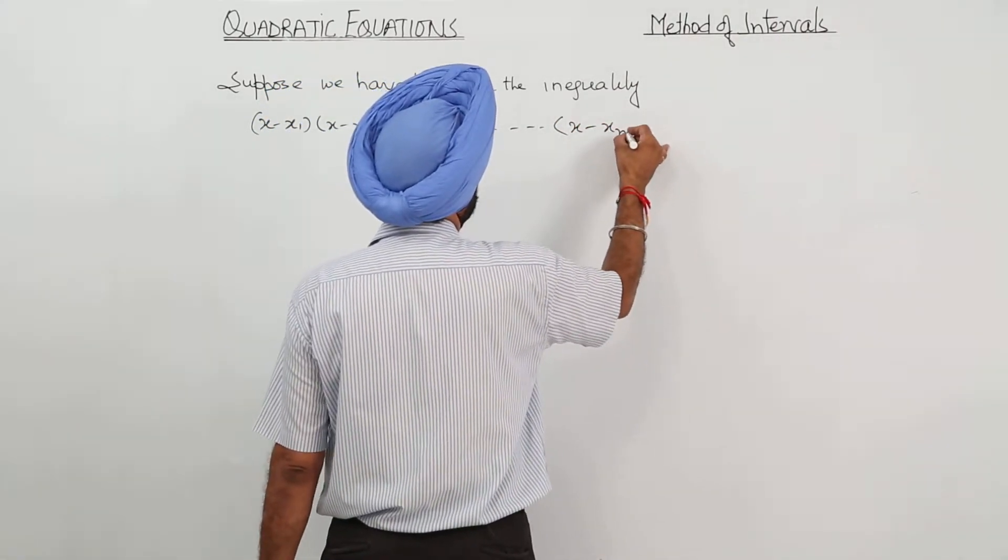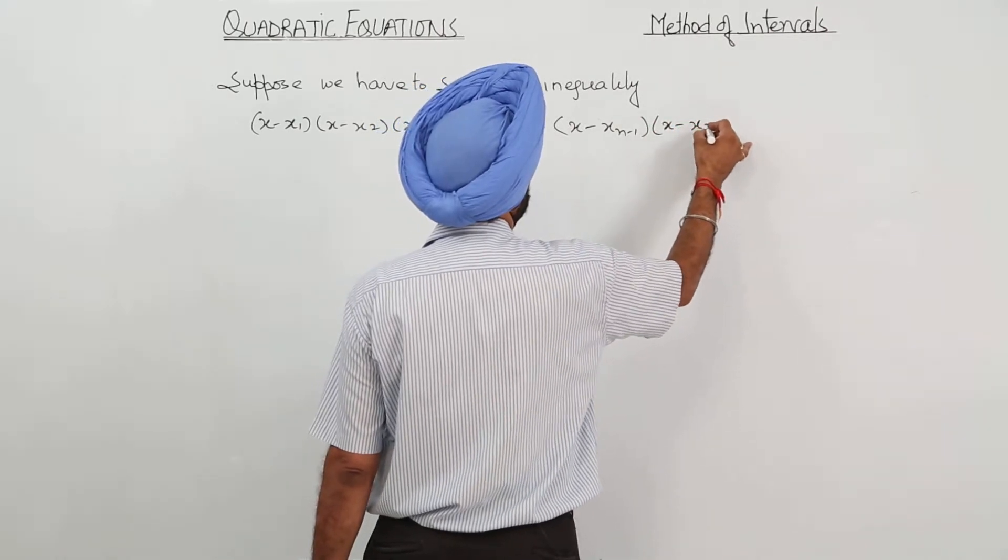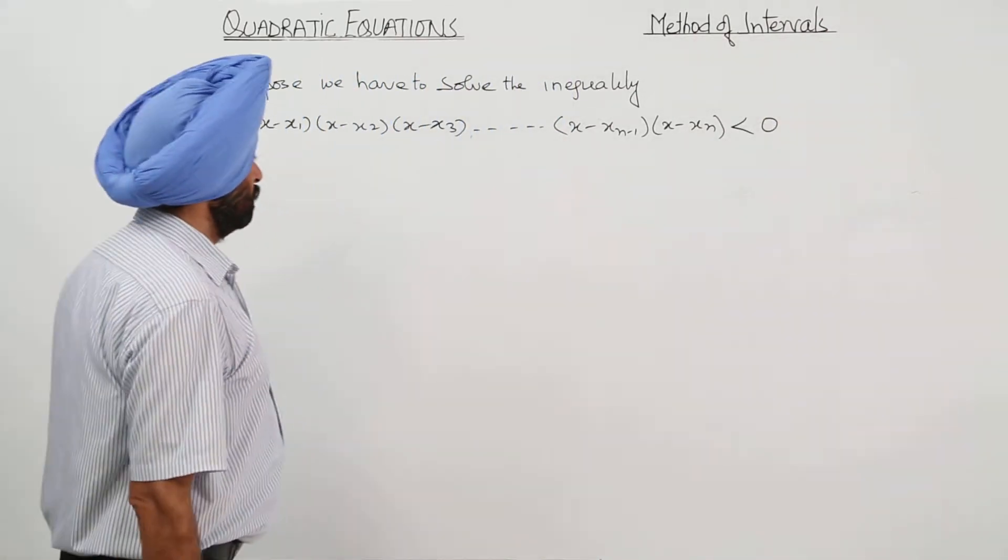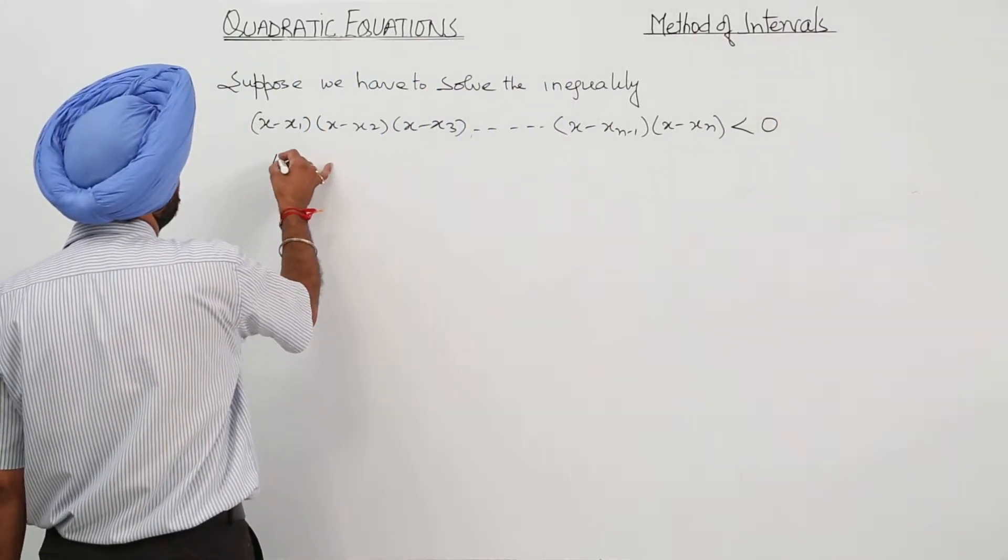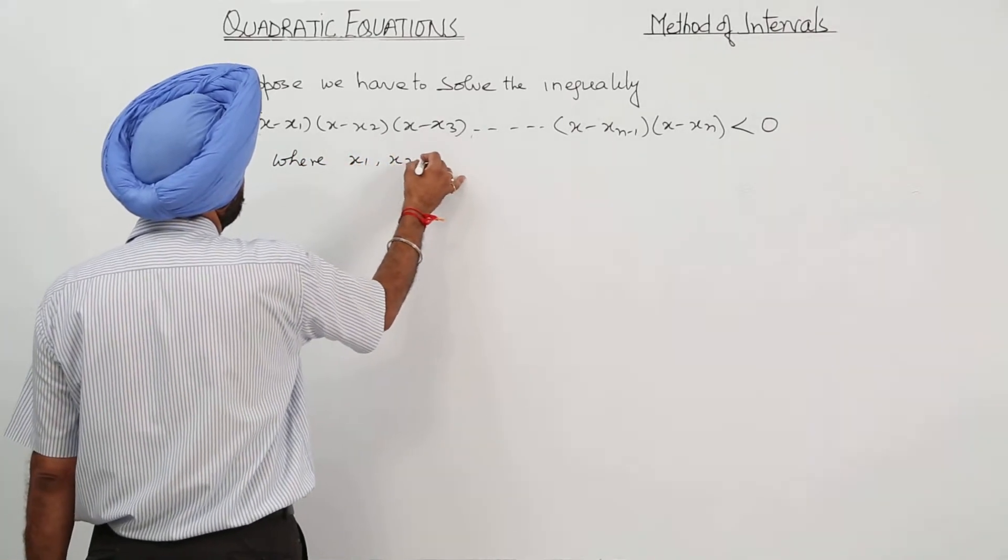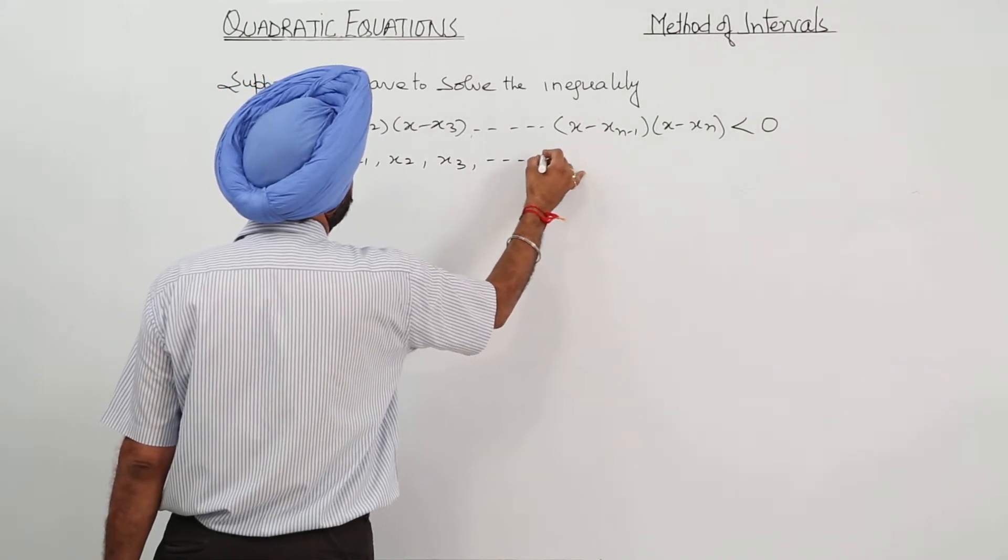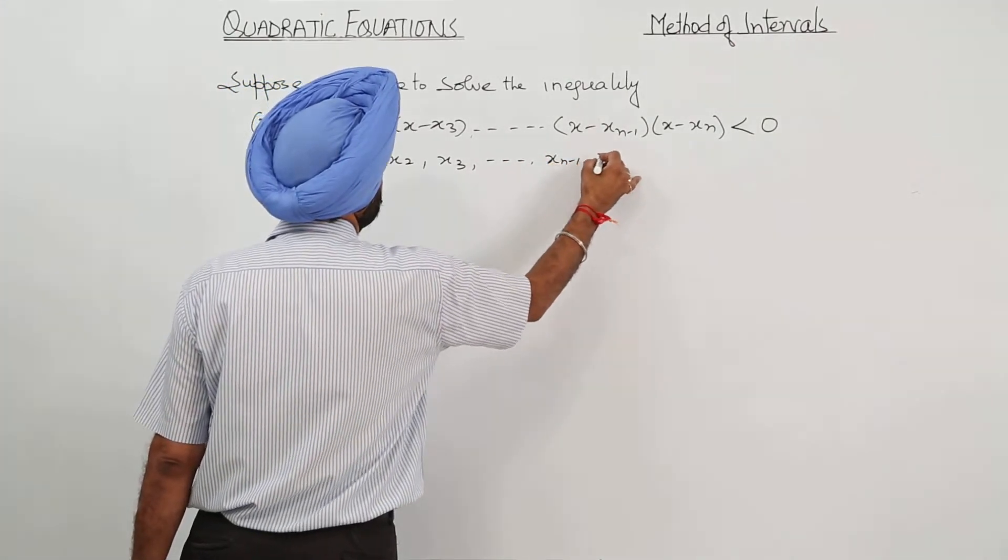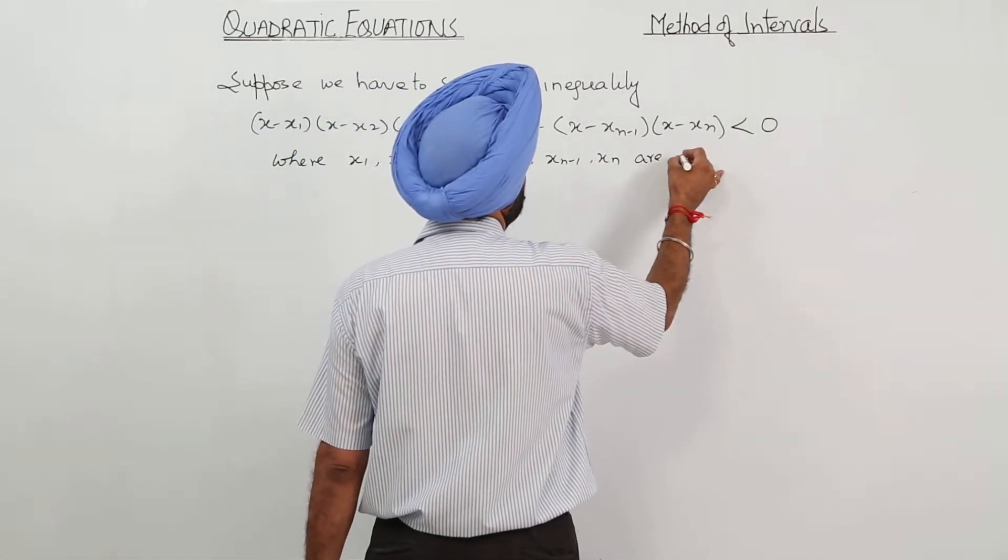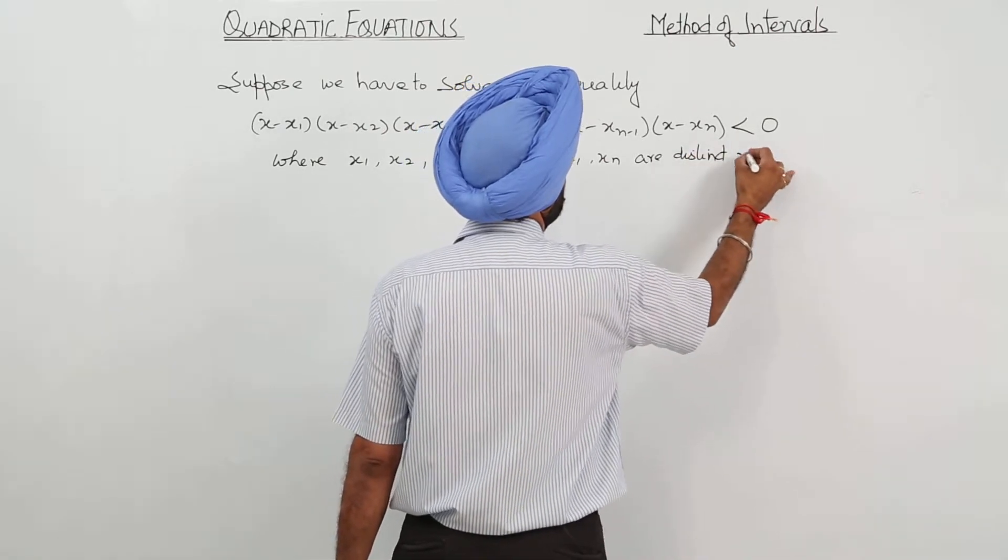x minus xn minus 1, x minus xn less than 0 where x1, x2, x3 and so on, xn minus 1, xn are distinct real numbers.